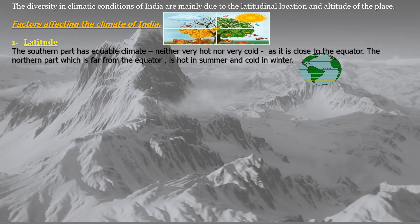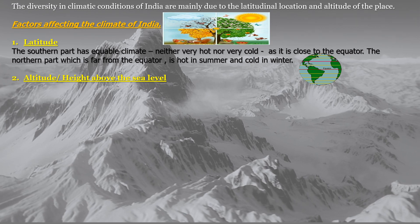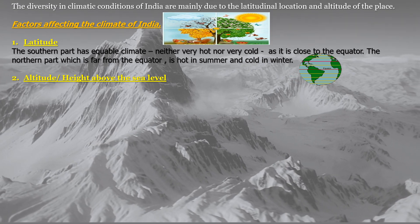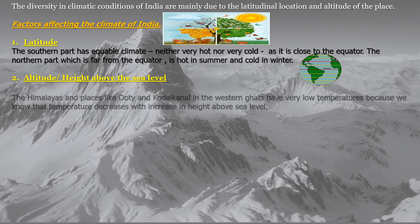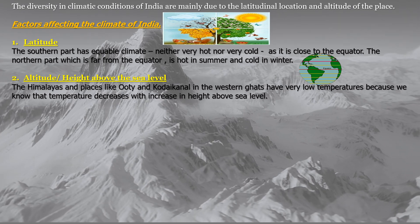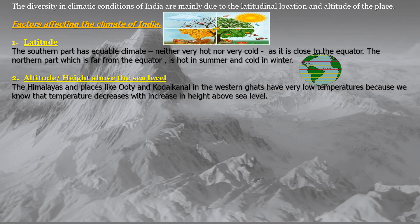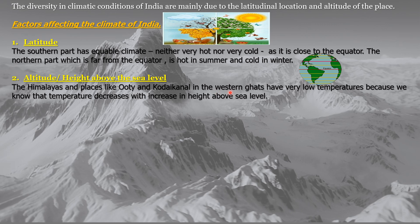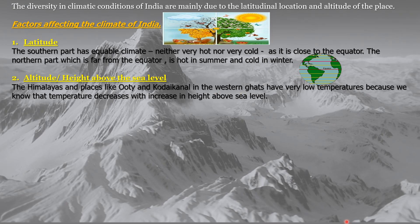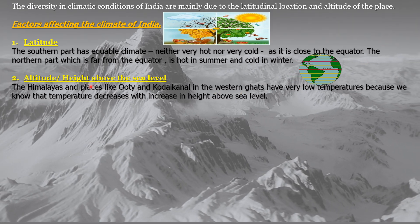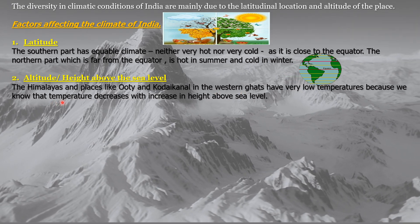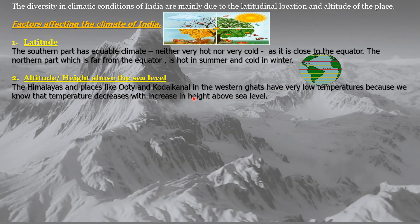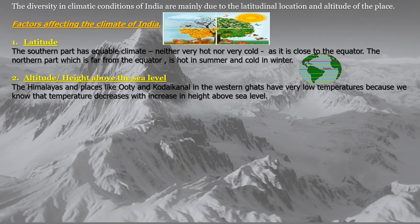The second factor which affects the climate of India is altitude, that is height above sea level. The Himalayas and places like Ooty and Kodaikanal in the Western Ghats have very low temperatures because temperature decreases with increase in height above sea level.